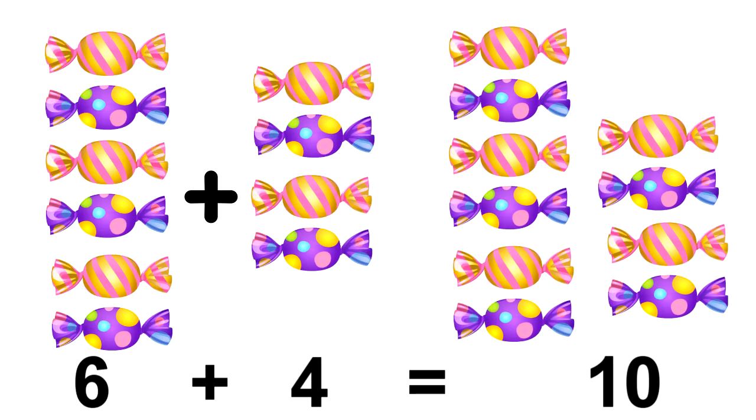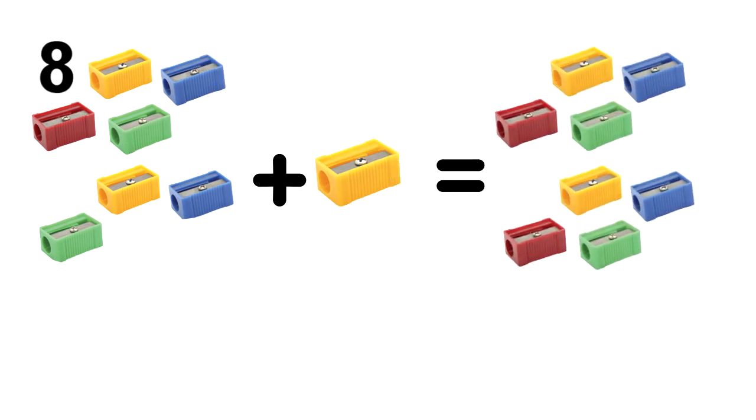There are 10 chocolates. There are 7 sharpeners and there is 1 more sharpener. So how many sharpeners are there? Count. Yes, there are 8 sharpeners. There are 6 strawberries.